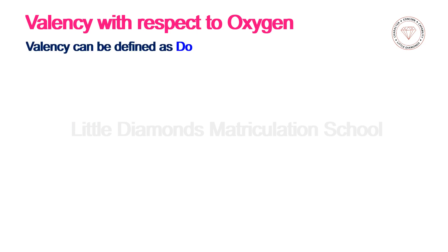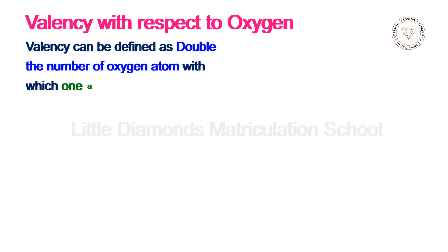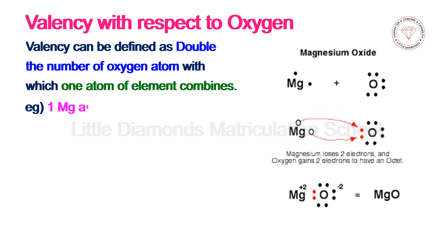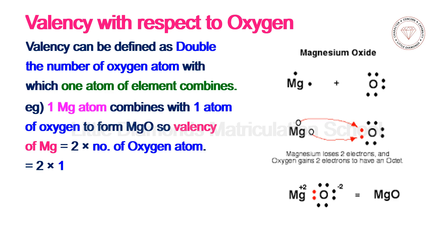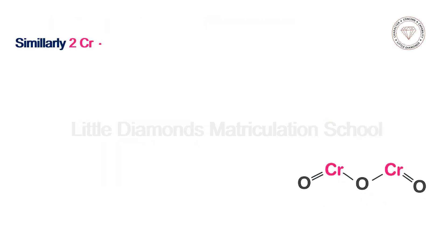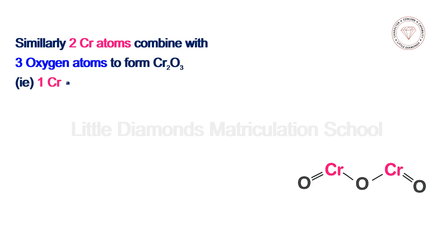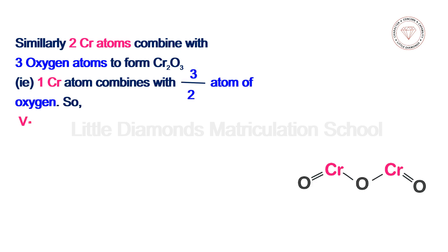Valency with respect to oxygen is defined as double the number of oxygen atoms with which one atom of the element combines. For example, one magnesium atom combines with one oxygen atom to form MgO, so valency of magnesium = 2 × 1 = 2. For chromium oxide (Cr₂O₃), two chromium atoms combine with three oxygen atoms, meaning one chromium atom combines with 3/2 oxygen atoms. So valency of chromium = 2 × 3/2 = 3.